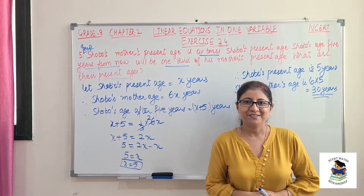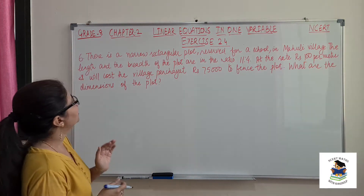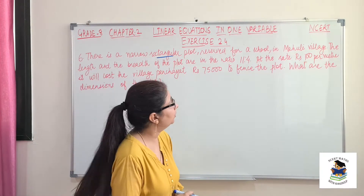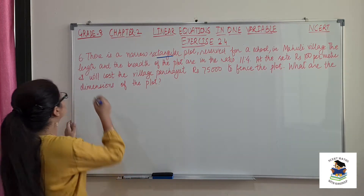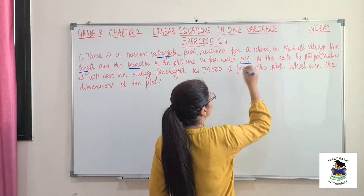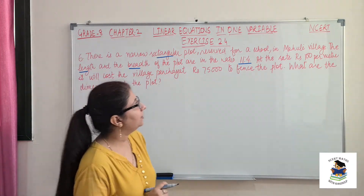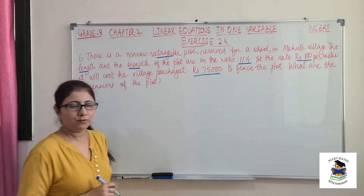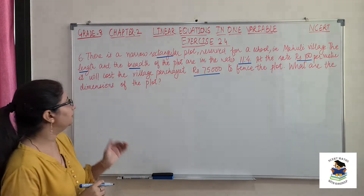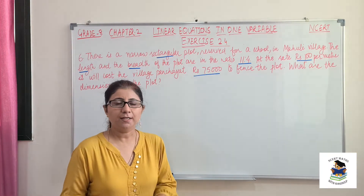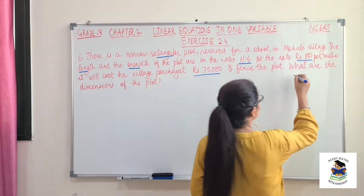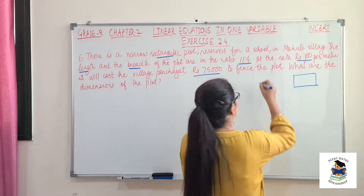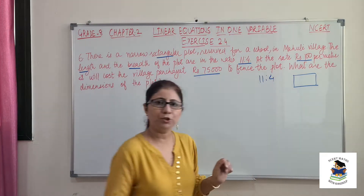Now let's move on to the 6th question. There is a narrow rectangular plot reserved for a school in Maholi village. The length and width of the plot are in the ratio 11 is to 4. At the rate of rupees 100 per meter, it will cost the village panchayat rupees 75,000 to fence the plot. What are the dimensions of the plot?